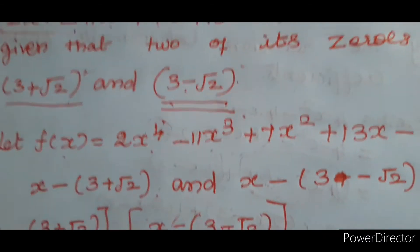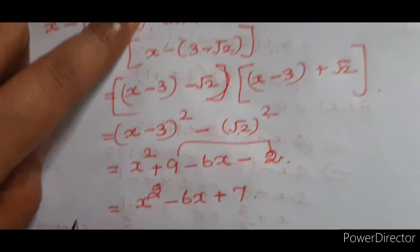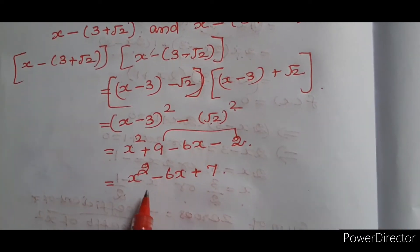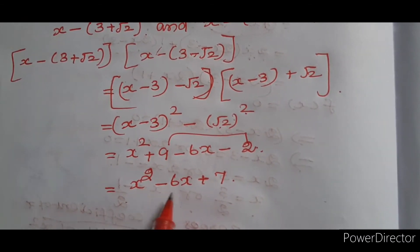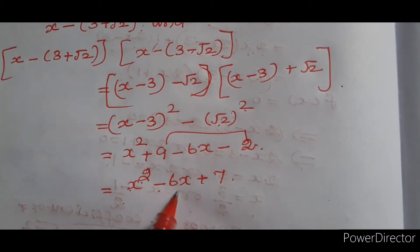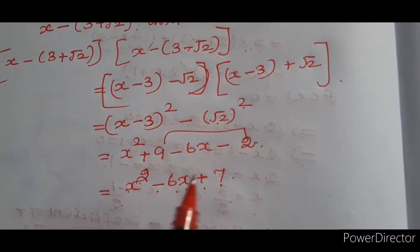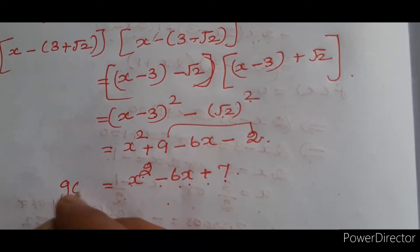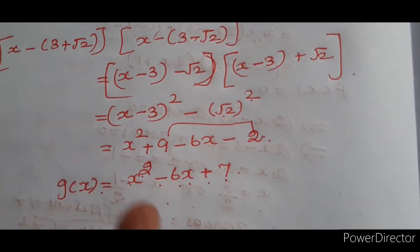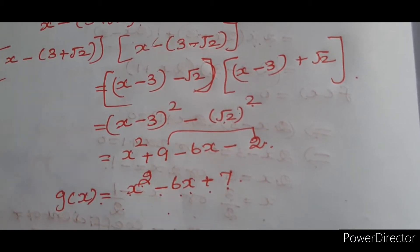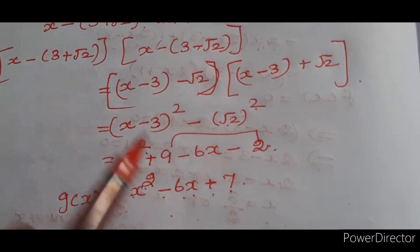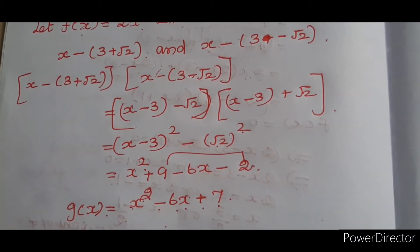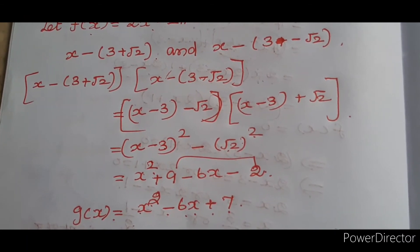Now I am going to use the division algorithm. f(x) equals 2x⁴ minus 11x³ plus 7x² plus 13x minus 7, and the divisor g(x) equals x² minus 6x plus 7, since it is a factor of this polynomial. Dividing f(x) by g(x), since f(x) has degree 4 and g(x) has degree 2, I will get a quotient polynomial of degree 2.